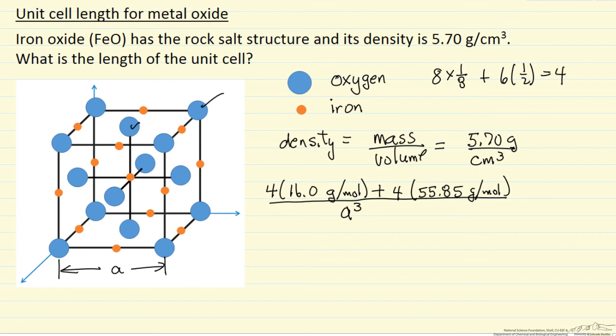And this is going to be equal to 5.70 grams per centimeter cubed. However, this is one cubed, I've looked at grams per mole, so I need Avogadro's number here in order to account for an entire mole. And so if we now multiply out this equation,